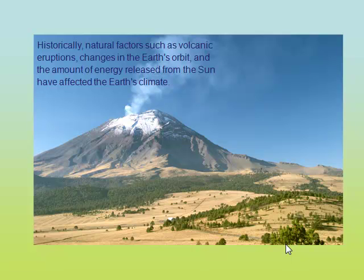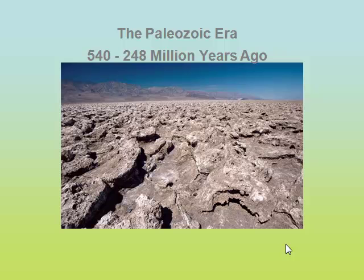The Earth's climate has changed drastically many times during the planet's 4.5 billion year history. Fossil remains found in rocks or ice of plants and animals help us to recreate scenes from millions of years ago. The atmosphere during the Paleozoic era contained very little oxygen. It was a very different world — a world without people or the kinds of plants and animals that thrive in today's climate.